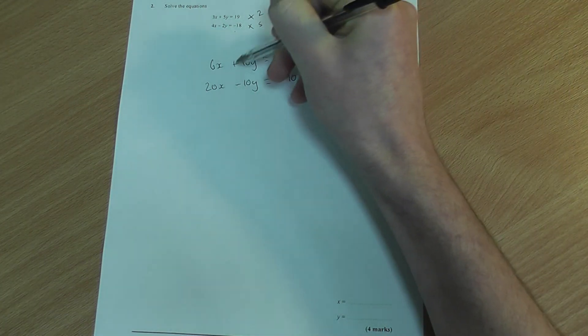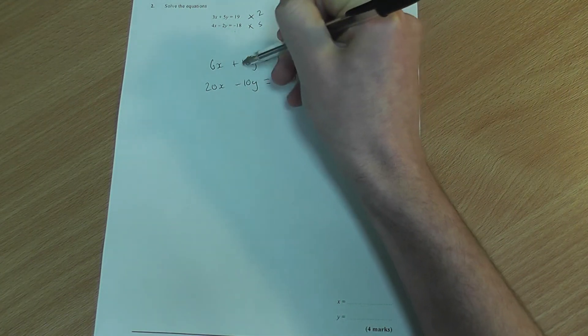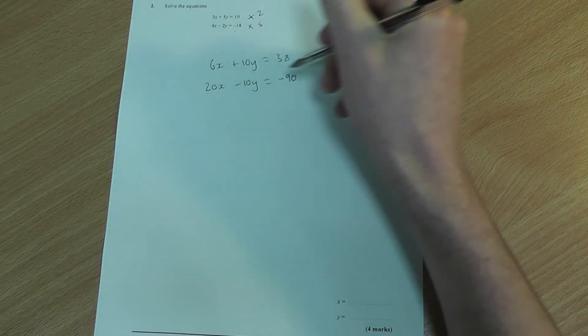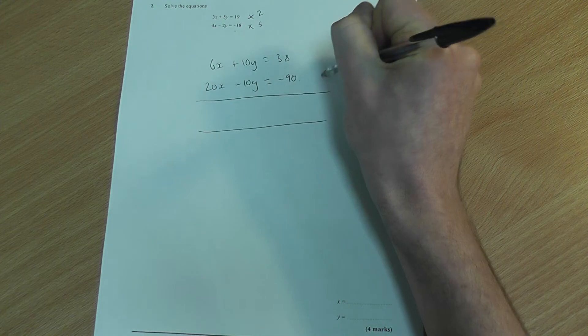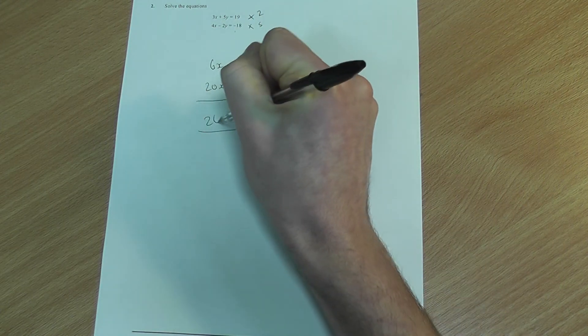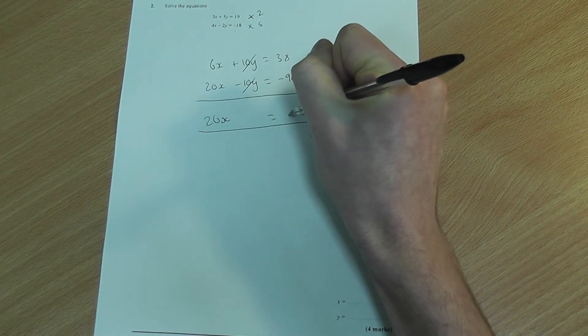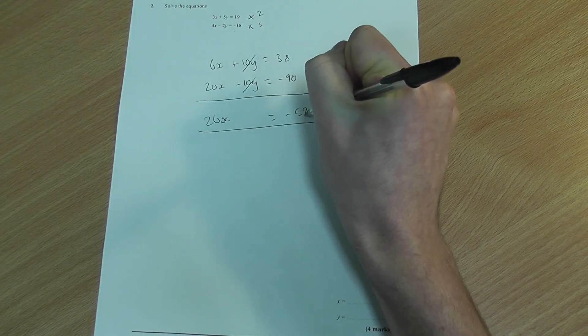Now, the reason I've done that is I've created a situation here whereby I've got a plus 10y and a negative 10y and I'm going to cancel those out by adding the two equations together. And I get 26x, they cancel, and over here I get negative 52.